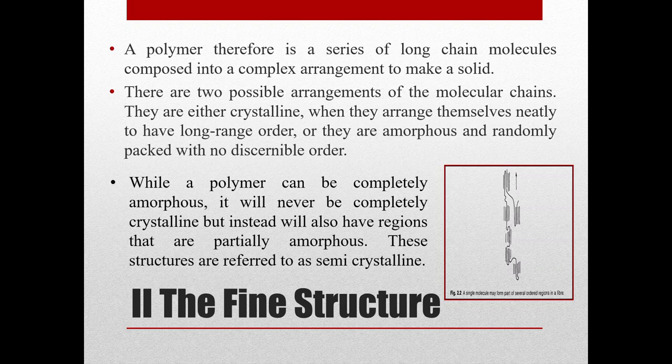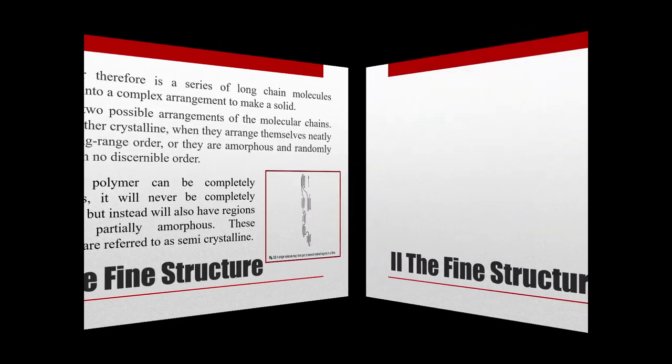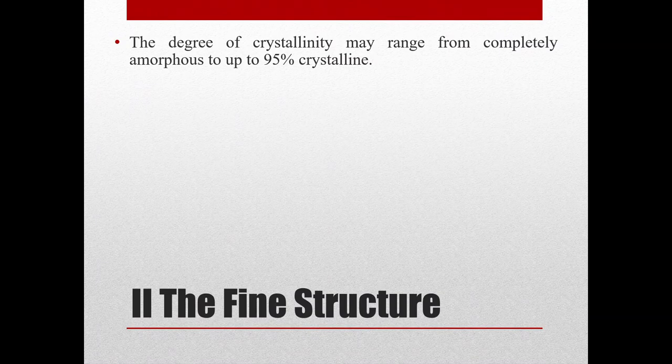To give a parallel example, one can imagine the molecular chains to be like fibers within a sliver — if a fiber is long enough, it can pass through well-arranged regions as well as completely randomly packed regions. While a polymer can be completely amorphous, it will never be completely crystalline, but will also have regions that are partially amorphous. These structures are therefore referred to as semi-crystalline. The degree of crystallinity may range from completely amorphous to up to 95 percent crystalline.